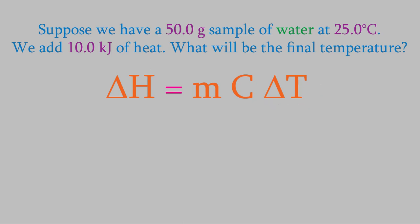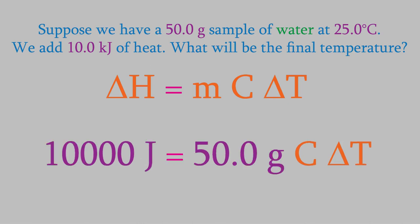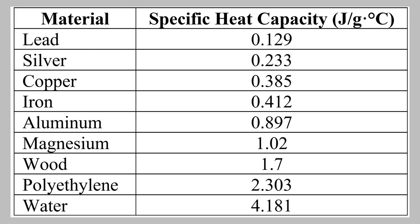Delta H is the change in the enthalpy, so that's 10.0 kilojoules. Don't forget that we need the units to work out, so we need delta H to be in joules. A kilojoule is 1,000 joules, so in this example we have 10,000 joules. The mass is 50.0 grams. To get the specific heat capacity, we need to look at that table that we saw earlier. This tells us that the specific heat capacity of water is 4.181 joules per gram degrees Celsius.